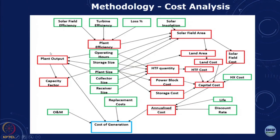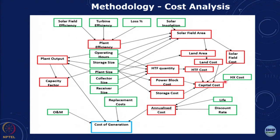Looking at all the components of a solar thermal plant, we estimate the different cost components: the solar field, the turbine, and the solar insolation. For a given location, we know the solar insolation, and from that we can estimate the solar field area, solar field cost, land area, land cost, and heat transfer fluid cost. We also get the power block capital cost from the turbine, generator, and heat exchangers. From this total capital cost, we can annualize it based on a discount rate and calculate the replacement cost and capacity factor.